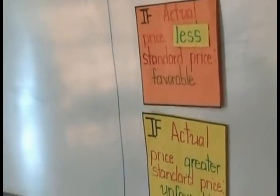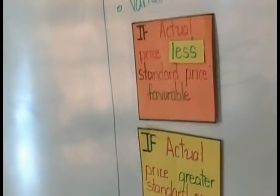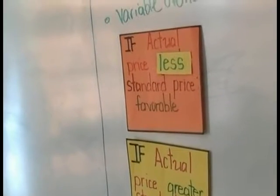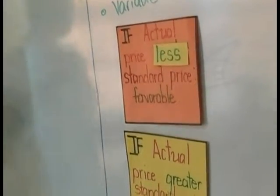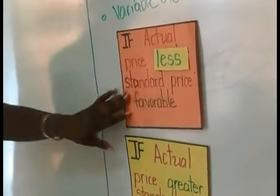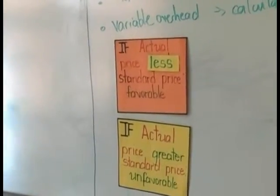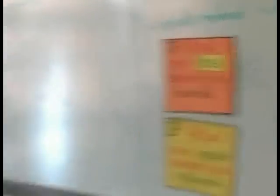The next section speaks about unfavorable and favorable — notations we'll use throughout the calculation of these elements. If actual price is less than the standard price, it is favorable. If actual price is greater than the standard price, it is unfavorable.